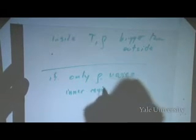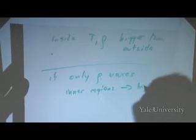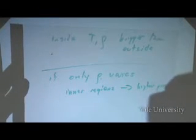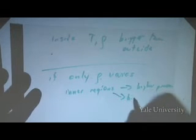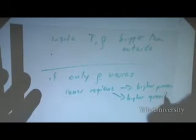Now, it turns out that if you just keep the temperature constant all the way through the star, you never achieve this balance. So, if only the density varies, then inner regions do have higher pressure. But the increase in density also increases the force of gravity, because gravity is dependent on how much mass there is. And if you increase the density, you also increase the amount of mass. So, you have higher pressure, but you also have higher gravity.